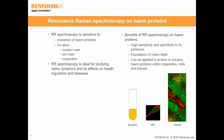Resonance Raman spectroscopy is sensitive to the presence of heme groups and can reveal information on the oxidation state, spin state and oxygenation of the heme. It is therefore ideal for studying redox dynamics and its effects on health regulation in diseases. The main advantage of using resonance Raman over other techniques is its applicability to heme proteins in different environments: in solution, in isolated mitochondria, and within cells and tissues.